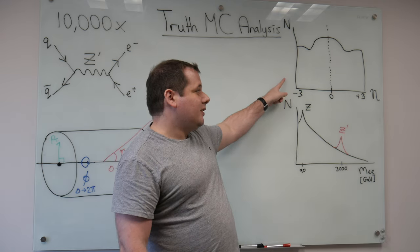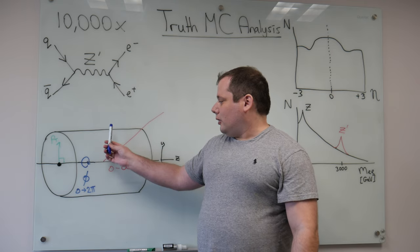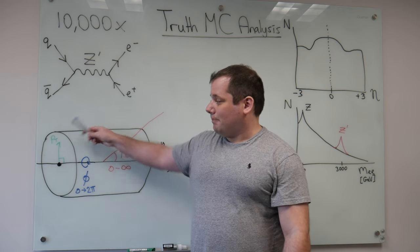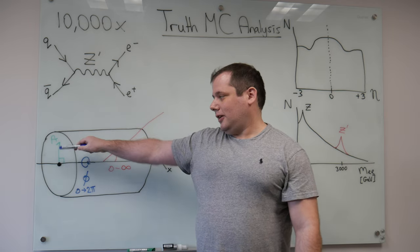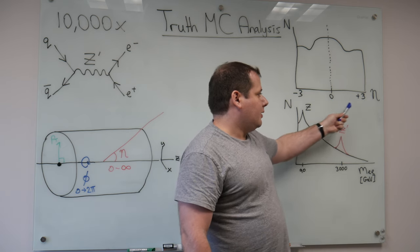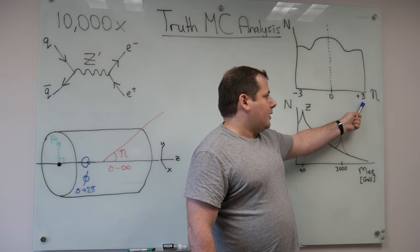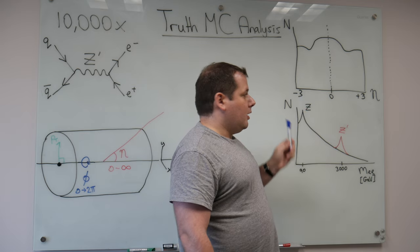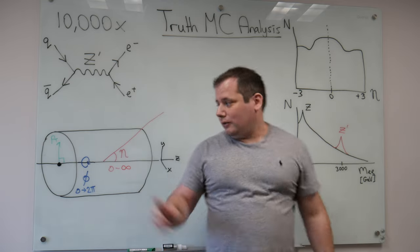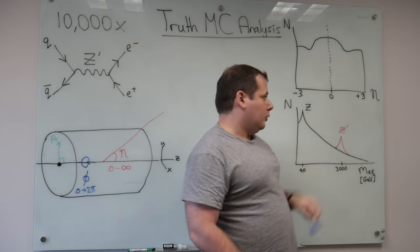So if we take the eta distribution to begin with, then remember eta we said goes from zero to infinity. In fact, it goes in one direction to infinity. If you go in the other direction then you can get a minus eta value, so it goes to minus infinity. So in a plot of the eta distribution you would have zero in the center, and because we generally look up to eta values of 3, 4, 5, the maximum on the x-axis is 3 and the minimum is minus 3. And so for every event I could take the Z' or the leptons and I could fill their eta value, this direction that each of the electrons or the Z' has, and I would build up a certain distribution that you can look at.